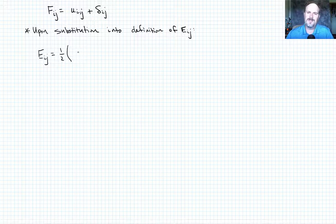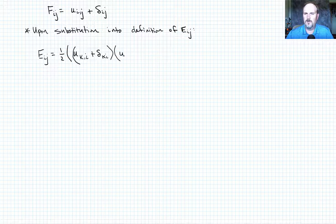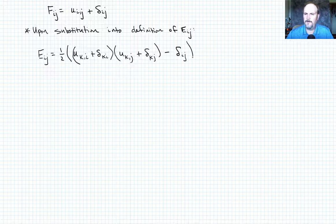And the first term in there was F_ki. So if we write this in the same form, this is going to look like u_k comma i plus delta ki, that quantity, times u_k comma j plus delta kj minus delta ij.